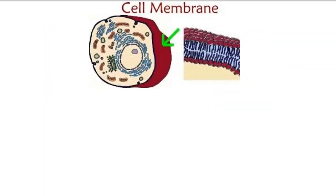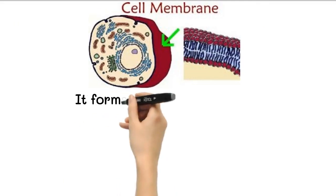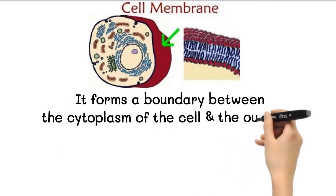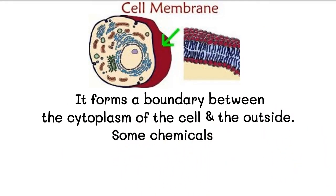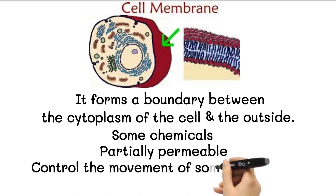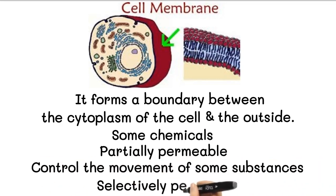All cells are surrounded by cell membranes, sometimes called the cell surface membrane, to distinguish it from other membranes inside the cell. It forms a boundary between the cytoplasm of the cell and the outside. Some chemicals can pass into the cell and others can pass out. We say that the membrane is partially permeable. The membrane can go further than these and actually control the movement of some substances. It is selectively permeable.